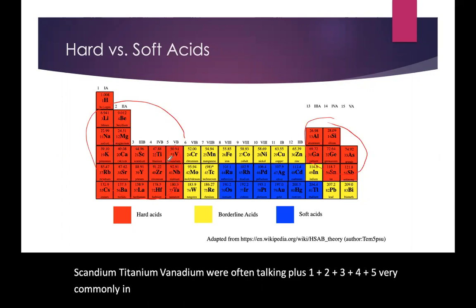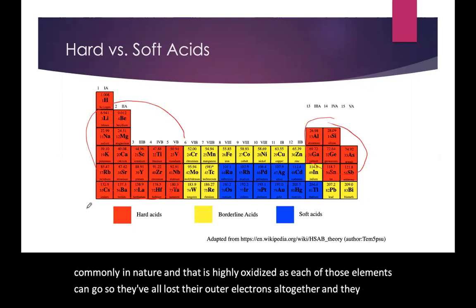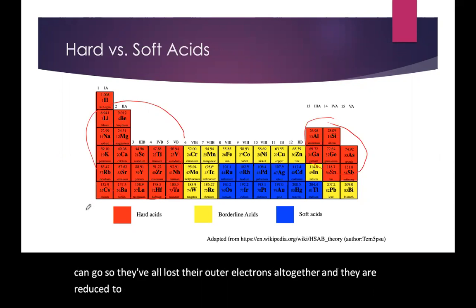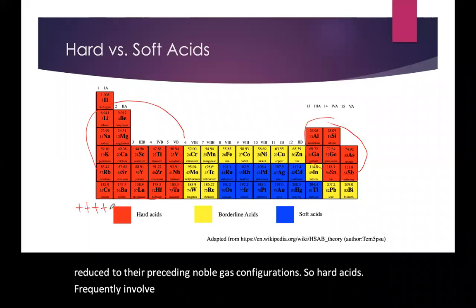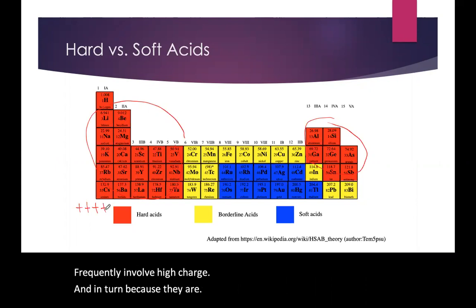And that's as highly oxidized as each of those elements can go. So they've all lost their outer electrons altogether and they are reduced to their preceding noble gas configurations. So hard acids frequently involve high charge. And in turn, because they are going down to the previous shell in electron configuration, these things tend to be small.